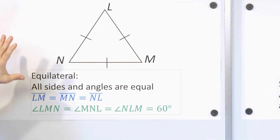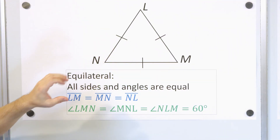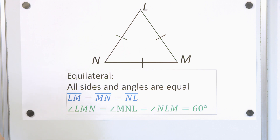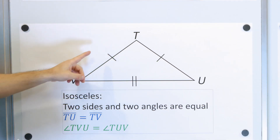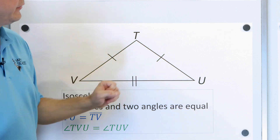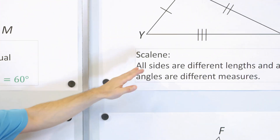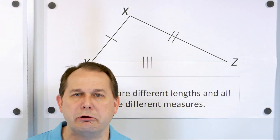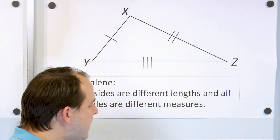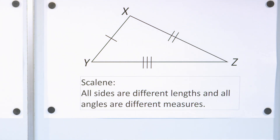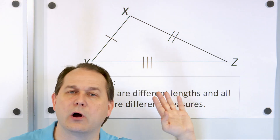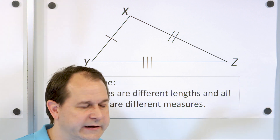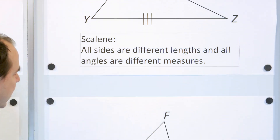When classifying triangles by their sides: an equilateral triangle has all sides equal and all angles equal; an isosceles triangle has two sides equal and two angles equal; and a scalene triangle has nothing equal — no sides, no angles, they're all different. Now if we want to classify triangles by their angles, we have other names as well.